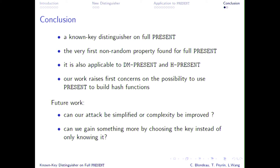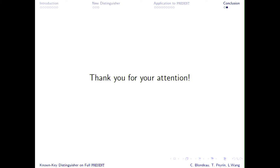There may be ways to extend this work — maybe the attack can be simplified or the complexity improved. Also, this is a known-key distinguisher; there is another model which is chosen-key, where the key is not only known but can be entirely chosen by the attacker. It is natural to wonder if you can use this extra knowledge to improve the attack by being even more generous to yourself. Thank you for your attention, and if you have questions I will do my best to answer them.